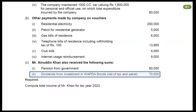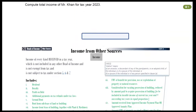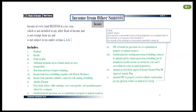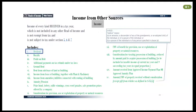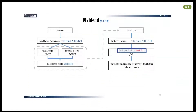The next item is dividend from WAPTA bonds. Please note that this dividend is net of zakat and withholding tax, which means that the Rupees 70,000 has been calculated after deducting zakat and withholding tax. Recall the slide of income from other sources — dividend is listed under income from other sources. Also recall the slide on dividend under the final tax regime: tax imposed on dividend is final tax, meaning the dividend will be taxed under the final tax regime.